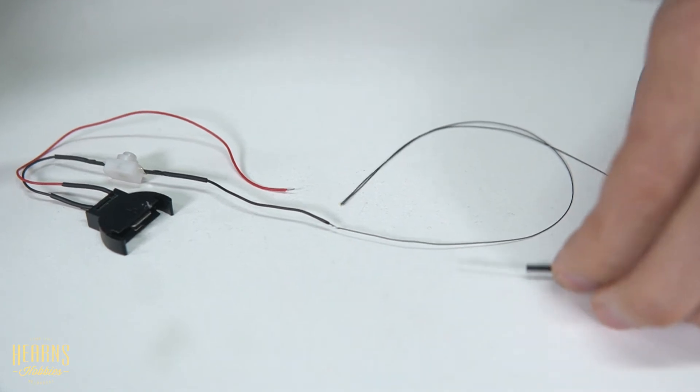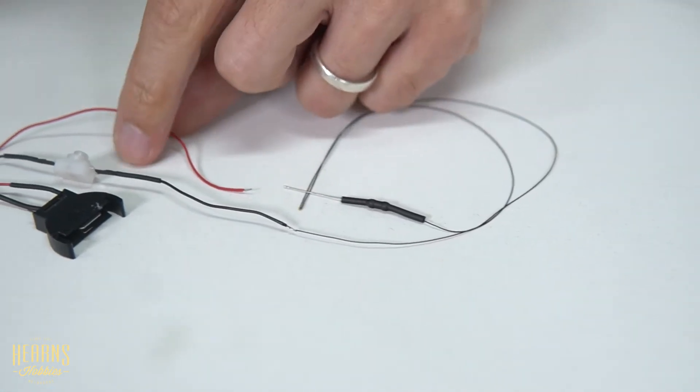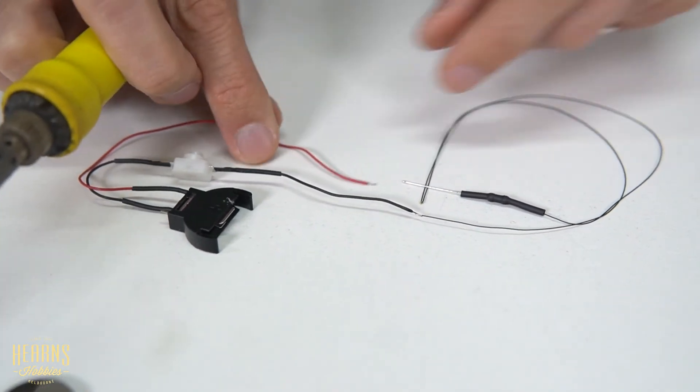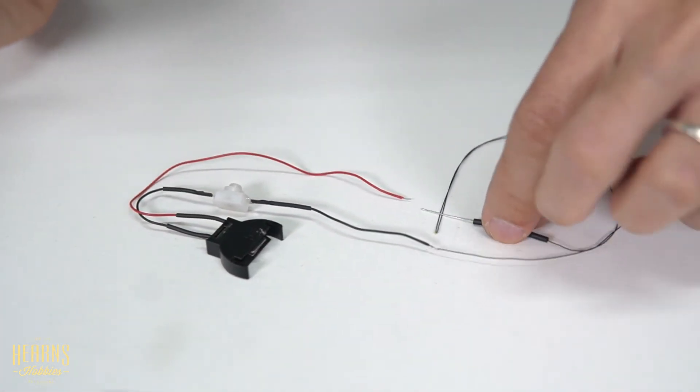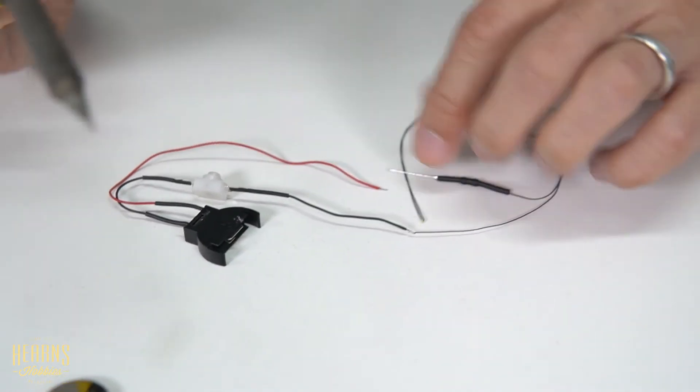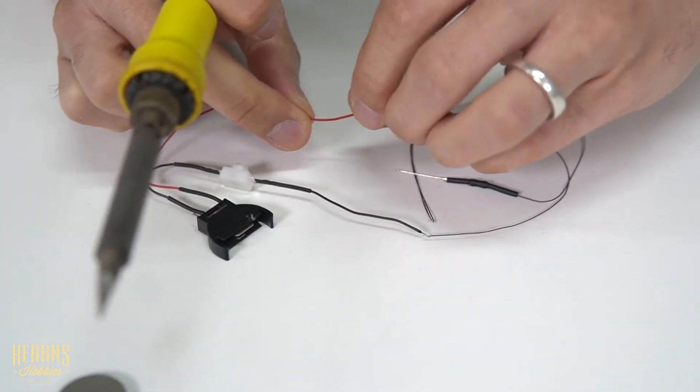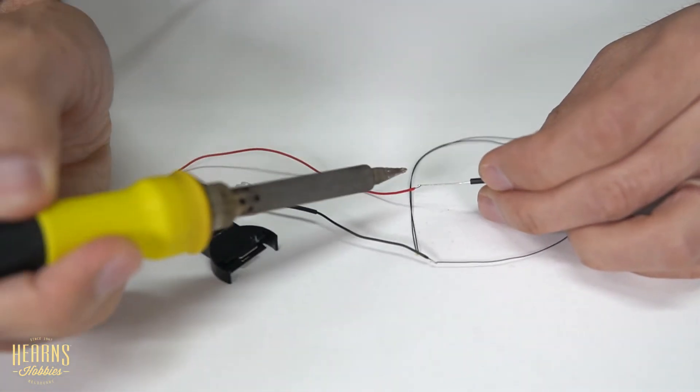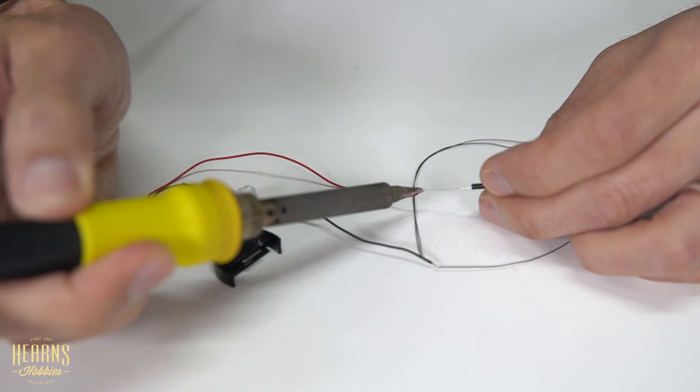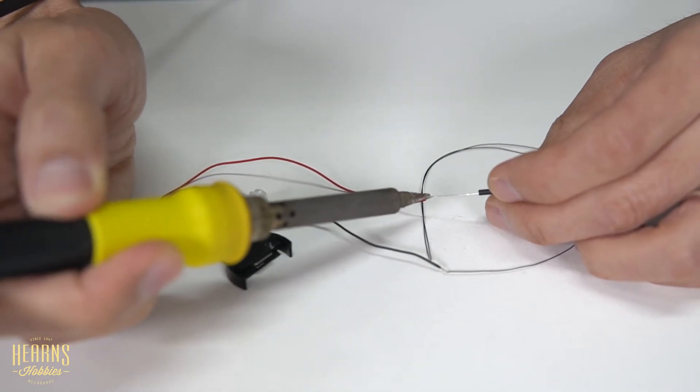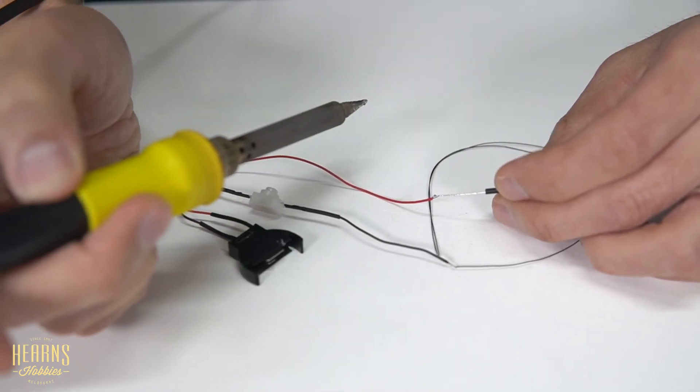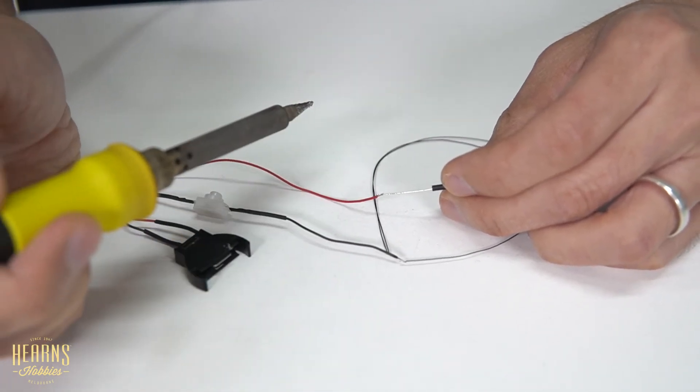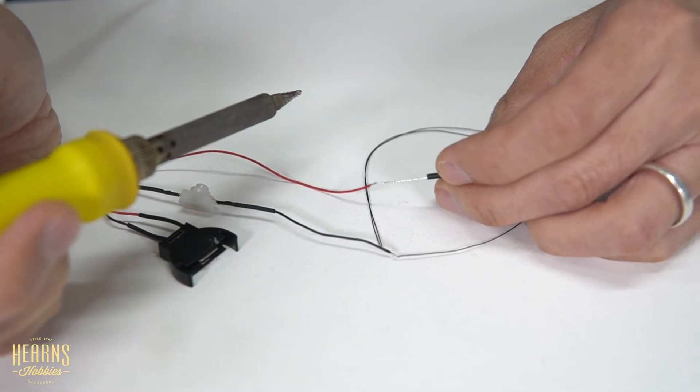We'll do the same thing with the positive. Let's bend that again, don't want to burn the table. We'll just hold those two together and apply the soldering iron. That's not joined - getting them joined is important. Okay, now they're joined.